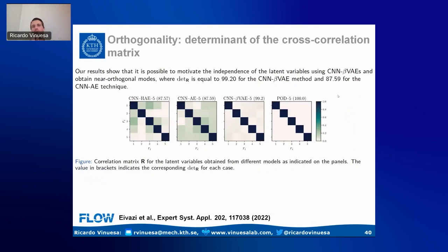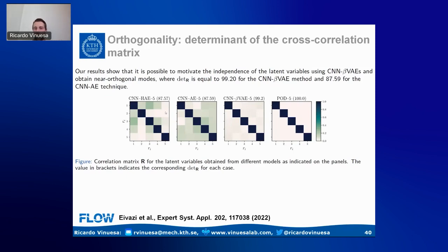Have we achieved orthogonality? Looking at the determinant of the cross-correlation matrix: POD has 100% orthogonality by construction, and the beta-variational autoencoder achieves 99.2% orthogonality — very remarkable. The other two autoencoder approaches are much less orthogonal, which is not good because we need orthogonality to interpret those modes and have physical relevance in the ROM.